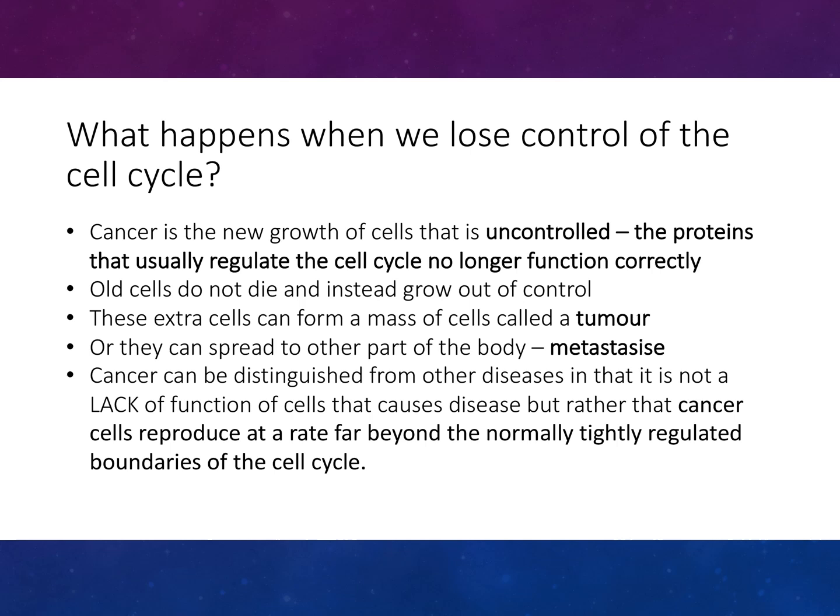So what happens when we lose control over the cell cycle? Cancer is an uncontrolled new growth of cells. The proteins that usually regulate the cell cycle no longer function properly, so old cells do not die and instead grow out of control. These extra cells can form a mass called a tumour or metastasise to another part of the body.